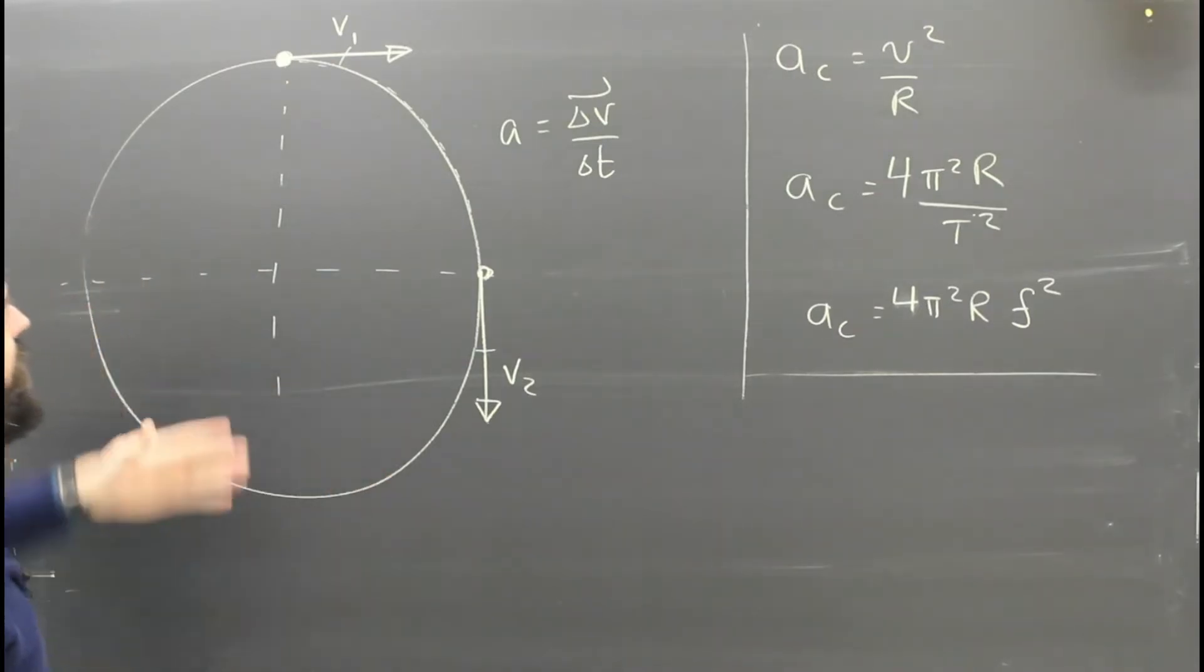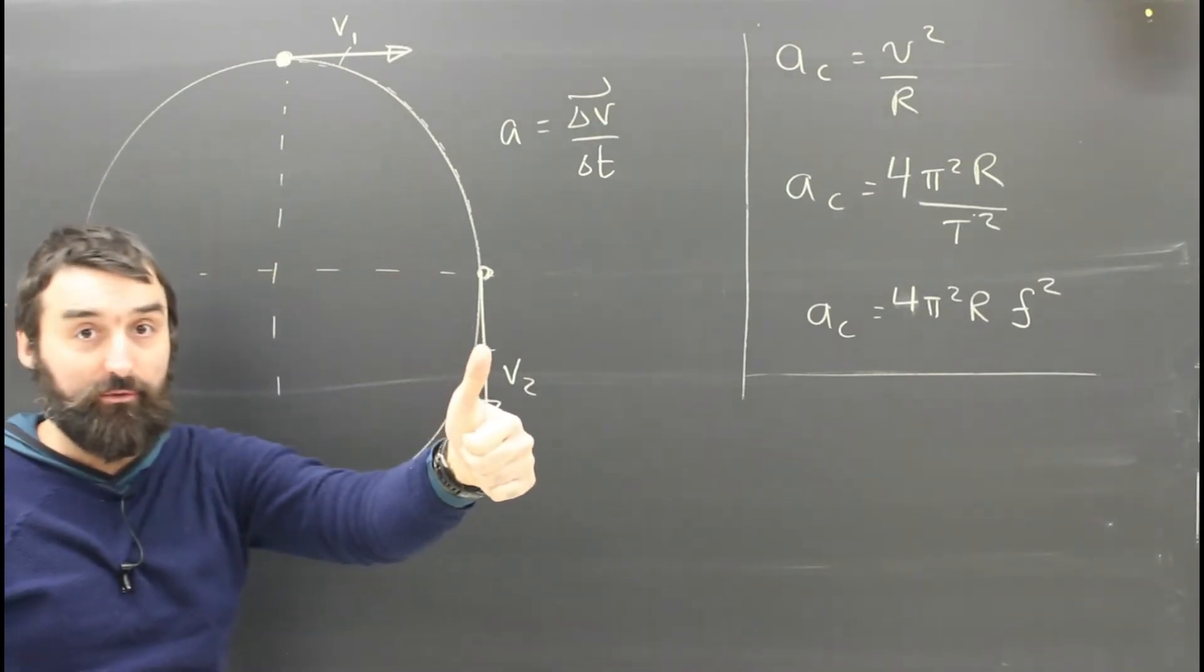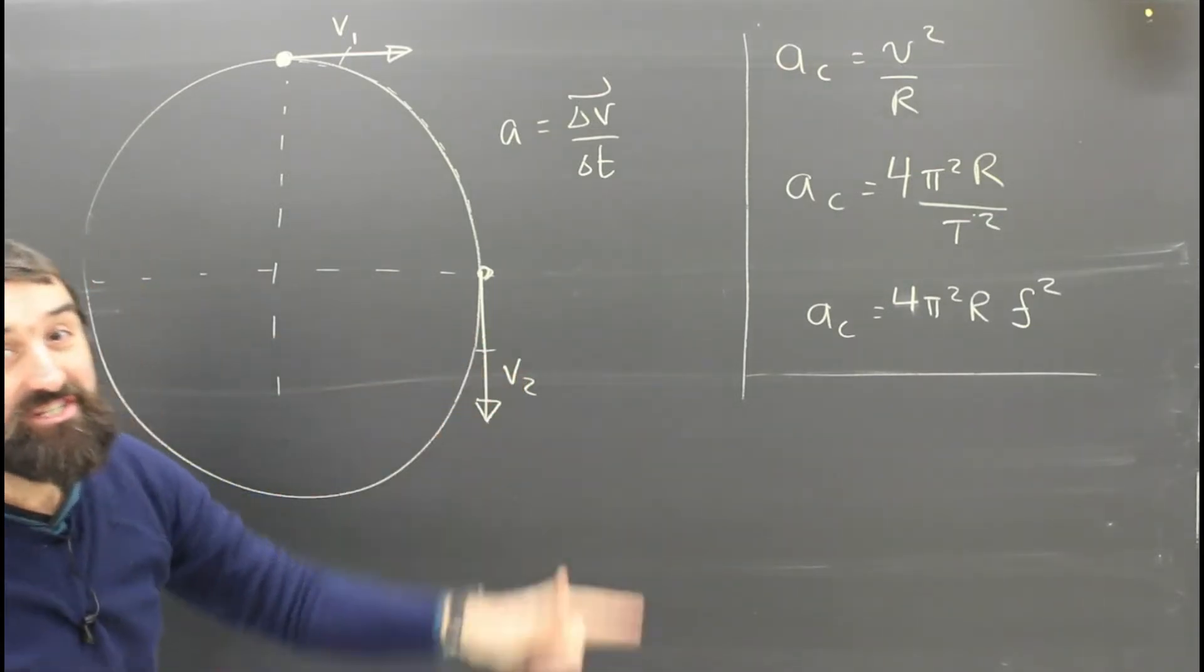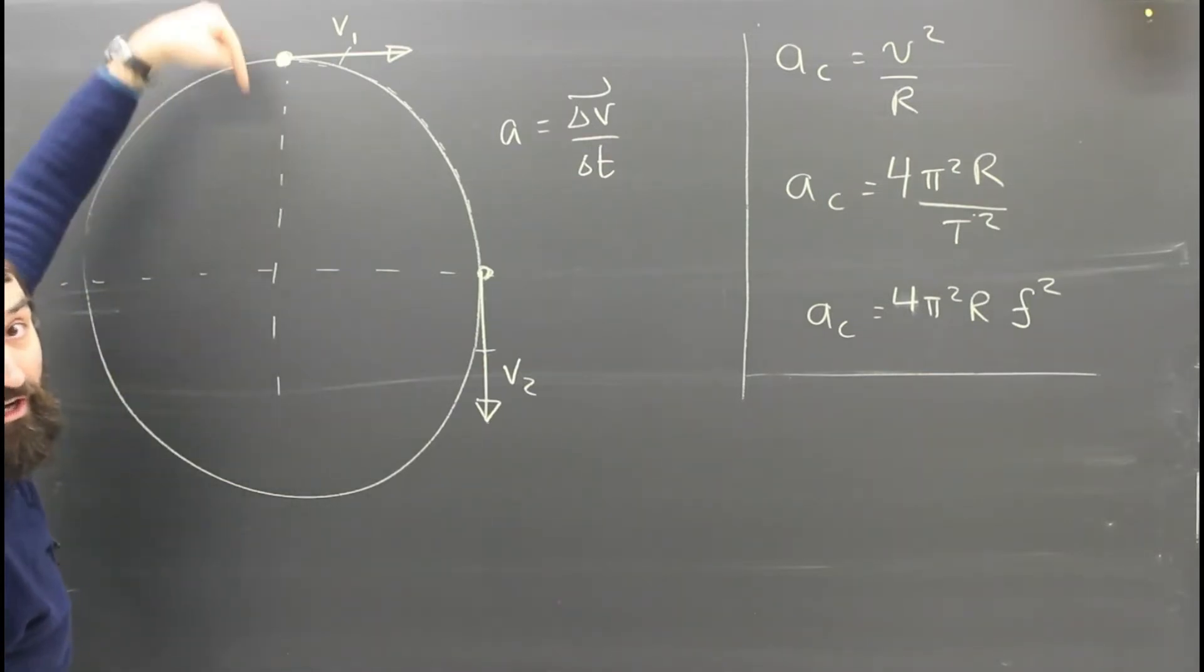So, you've got to know, A, when there's circular motion, there is for sure acceleration. You've got to know, B, that acceleration is directed towards the center of the circle.